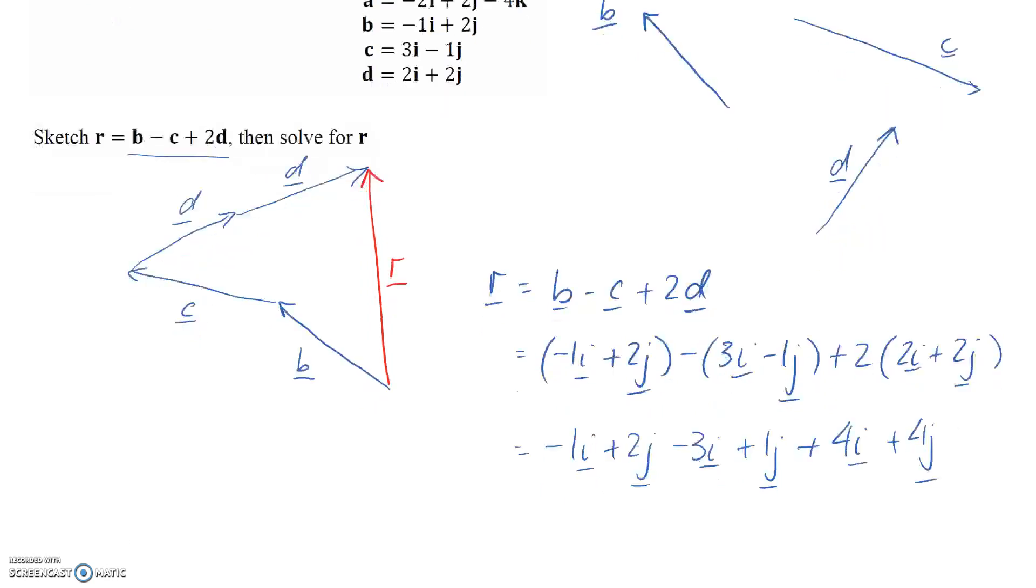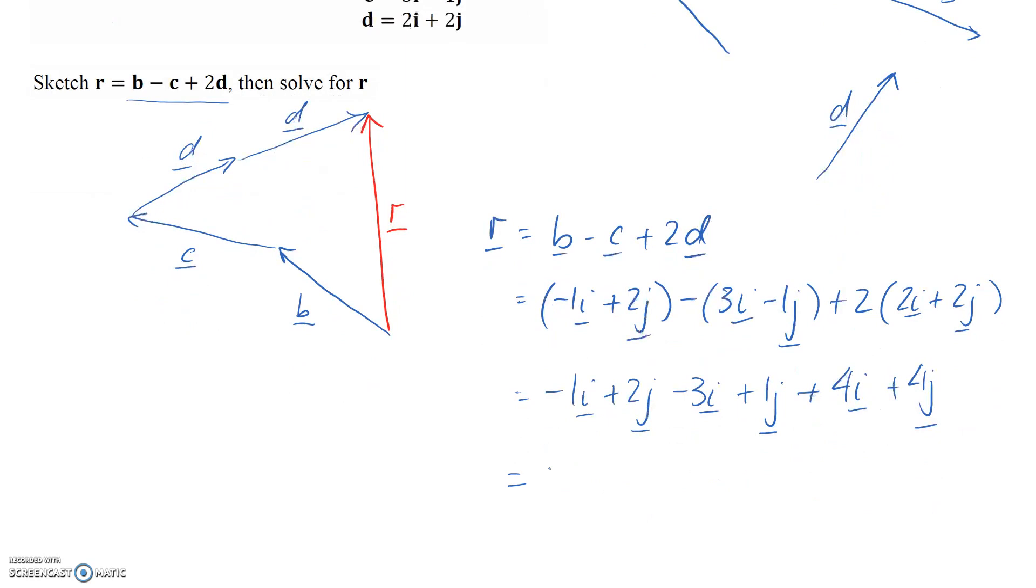Now we need to condense together the i and j components. For the i's we've got negative 1 minus 3, then plus 4. That takes us back to 0. In fact, all of these i components cancel out with each other, so we're left with 0.